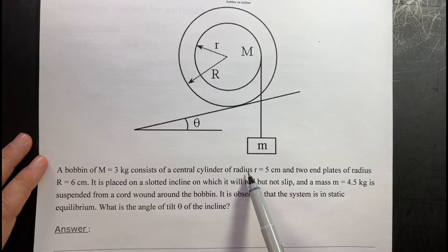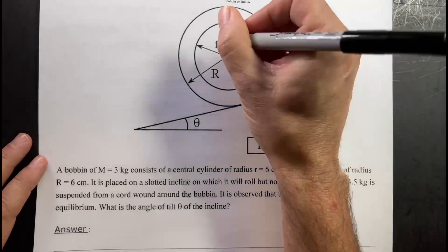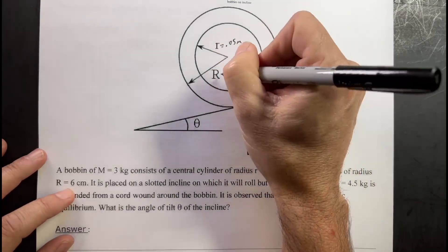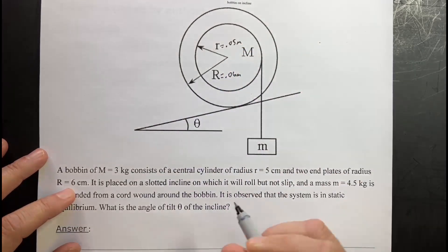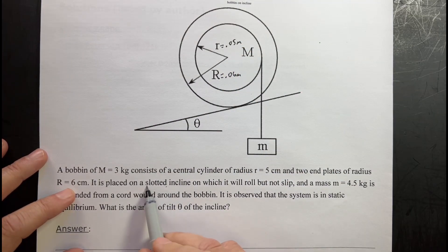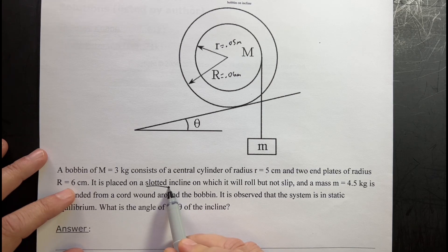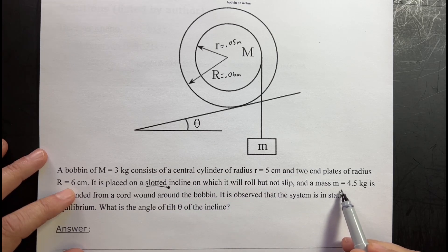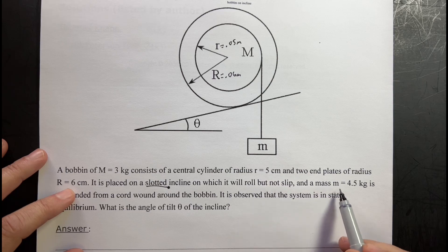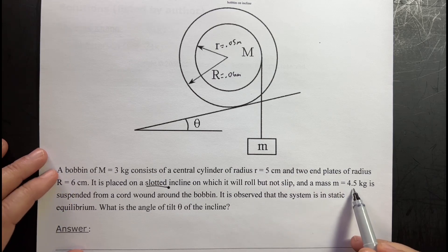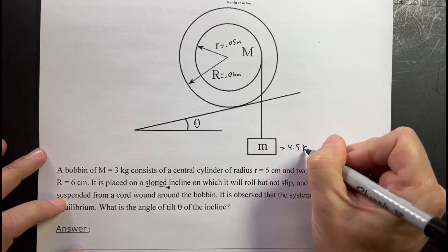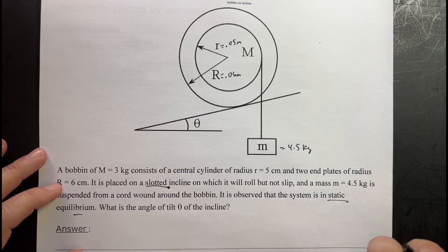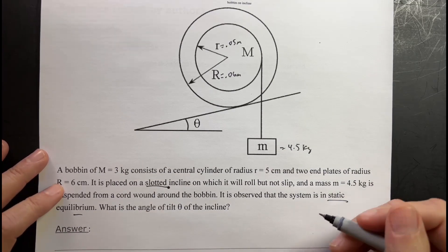With a central cylinder radius 5 centimeters. So this is 0.05 meters. The two end plates have a radius of 6 centimeters, this is 0.06 meters. Placed on a slotted incline on which it will roll but not slip and has a mass of 4.5 kilograms suspended from the cord. This is 4.5 kilograms. Wound around the bobbin. And observed in static equilibrium. What's the angle of tilt?